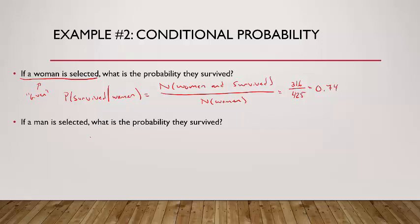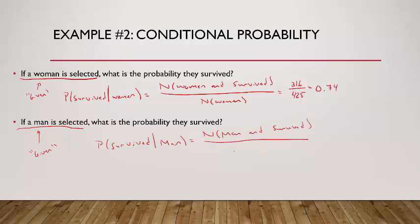If a man is selected, what is the probability they survived? The probability they survived, given that they were a man, is the number of people who were a man and survived divided by the number of men on the Titanic. There were only 338 men who survived out of 1,690 males on the Titanic, so that's only 0.20 — only 20% of the men on the Titanic survived.